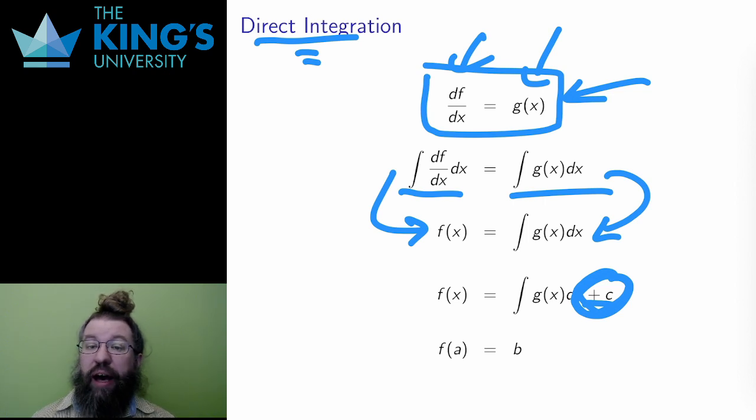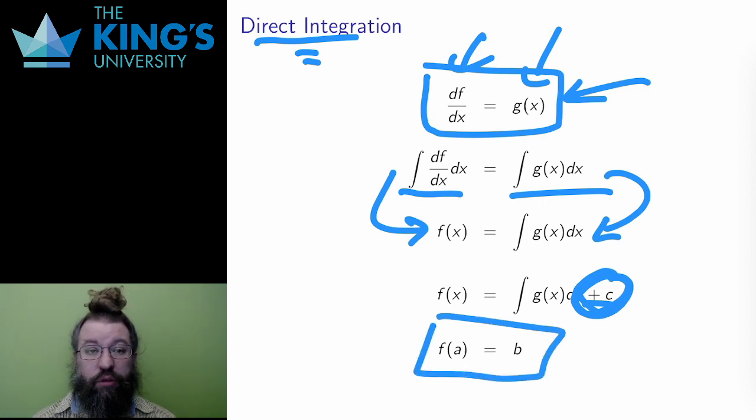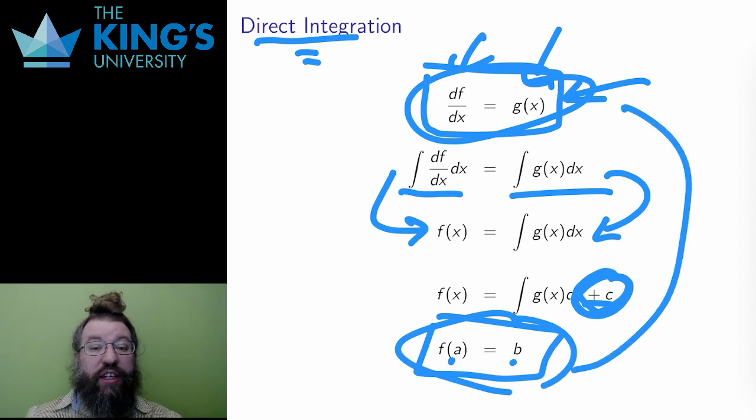This is just some value of the function, f of a equals b, for some numbers a and b. This initial condition will be enough to figure out the constant of integration, c. And if I have a DE and an initial condition, together they are called an initial value problem. And an initial value problem should have a unique solution.